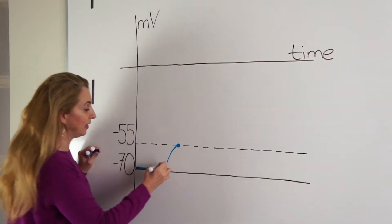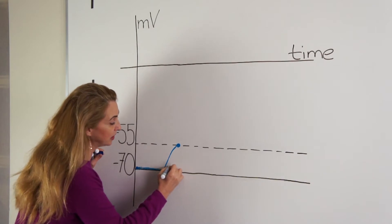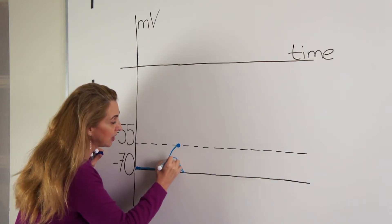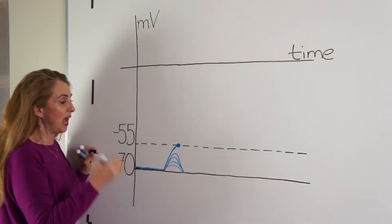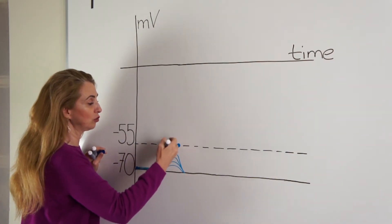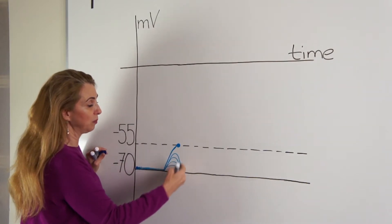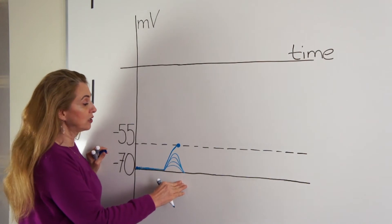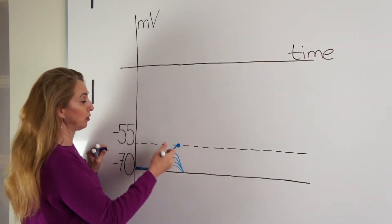Local potentials like depolarization can be of different grades. This local depolarization has to reach the threshold to produce action potentials. Depolarizations that are smaller are called sub-threshold stimuli and they are not able to produce an action potential.